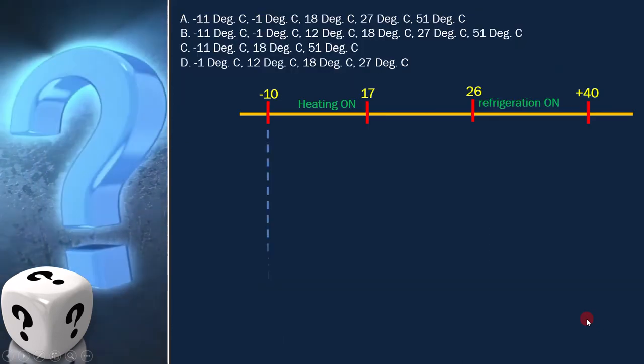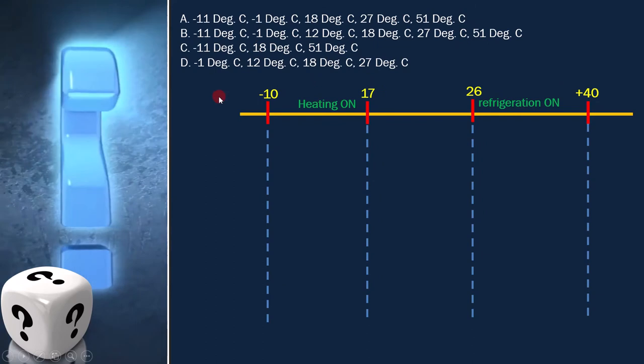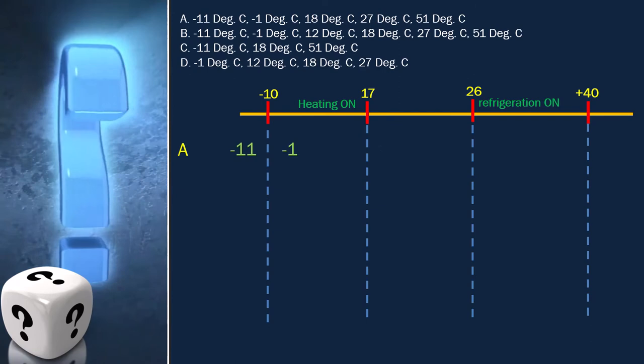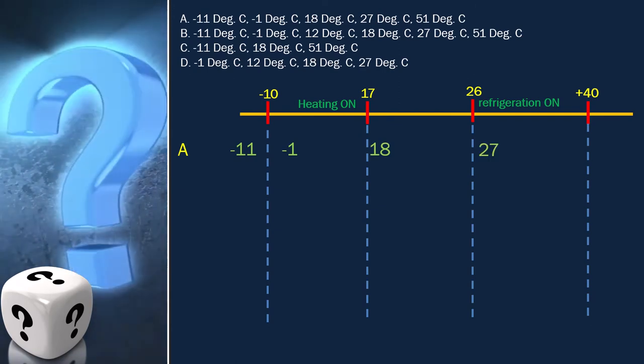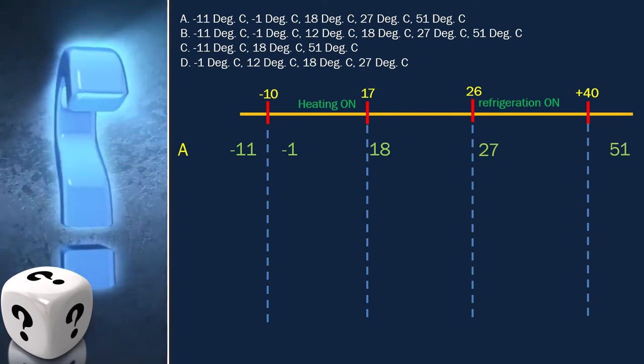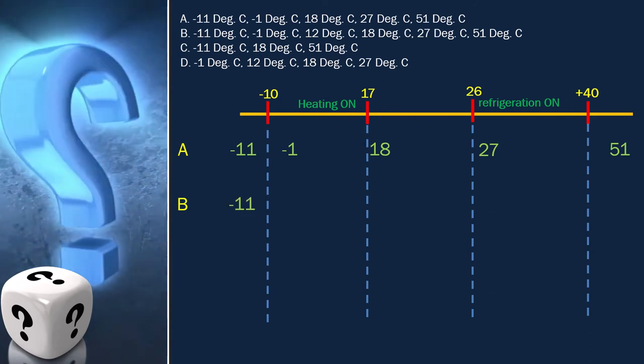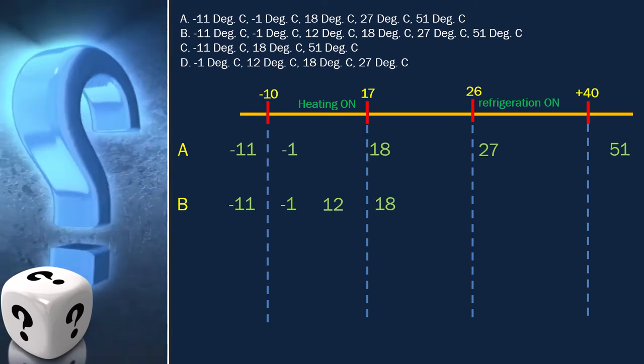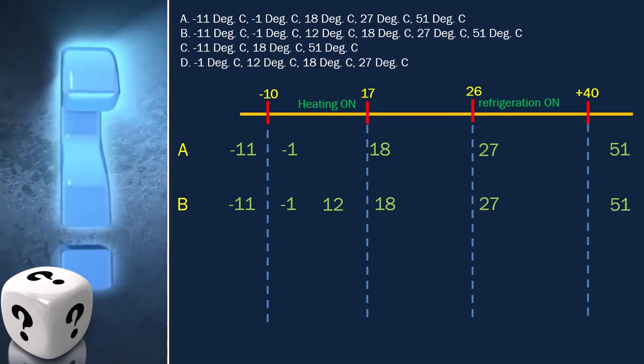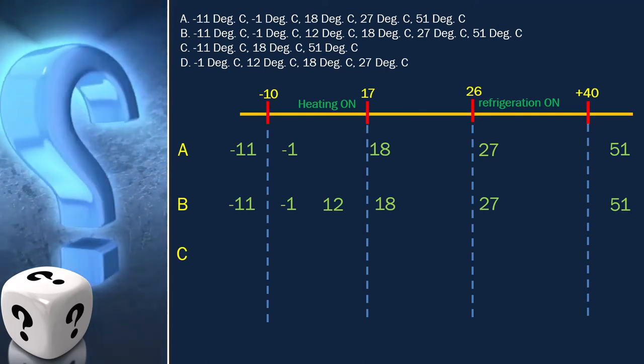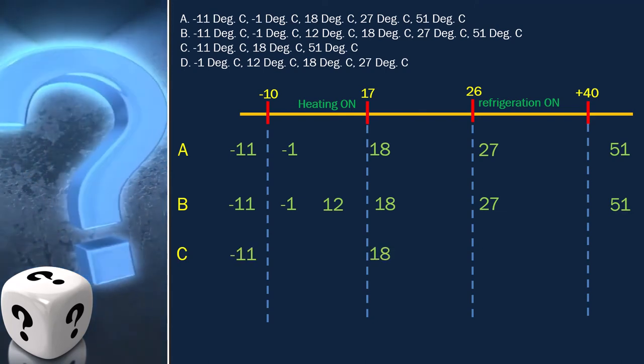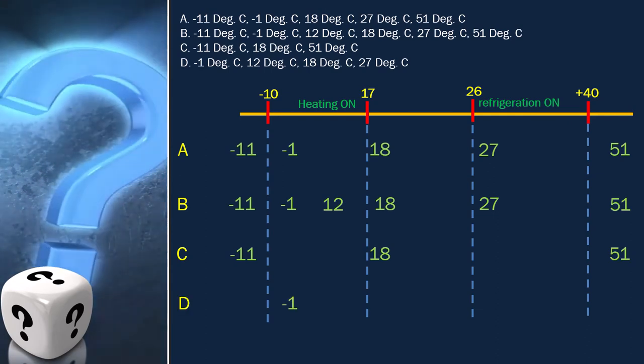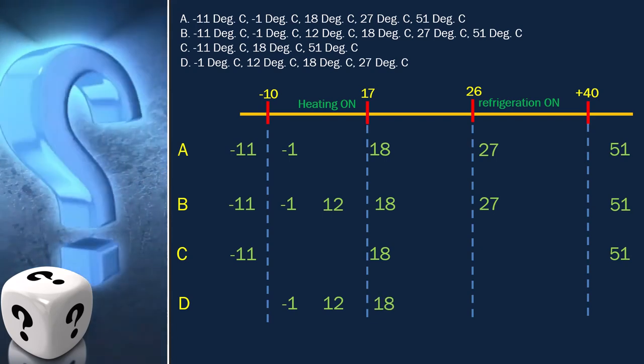Now, we will analyze each of the options one by one. Option A is negative 11, negative 1, 18, 27, 51. Option B is negative 11, negative 1, 12, 18, 27, 51. Option C is negative 11, 18, 51. Option D is negative 1, 12, 18, 27.